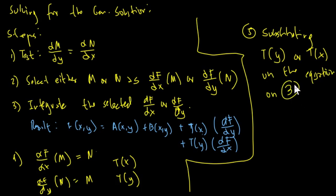That is the total flow of solving the general solution of an exact differential equation. We have exactly five steps, including the algebraic manipulations we are going to do. Basically, these are the five general steps.